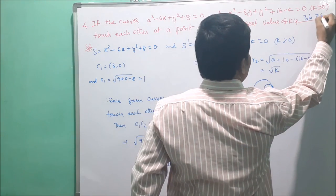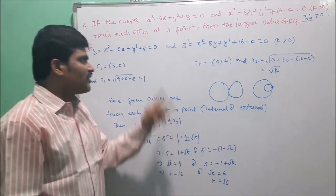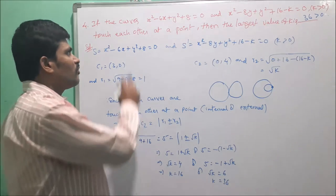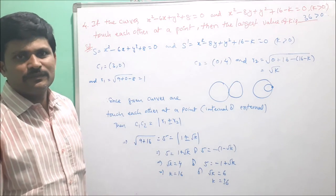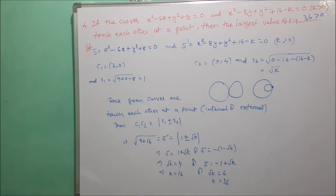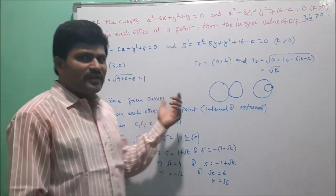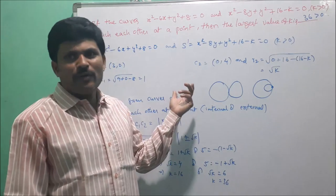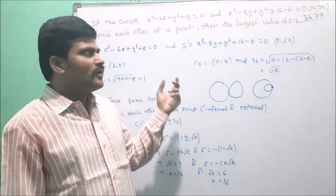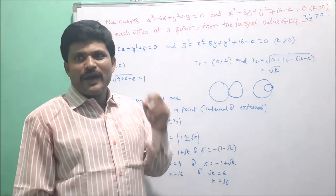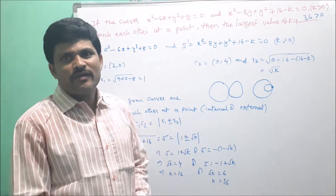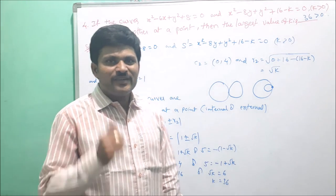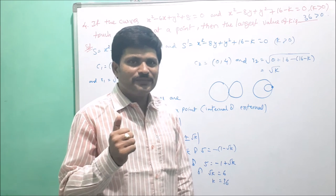K = 36 is always positive. This is the solution for this problem. These are the solutions of all four problems. Prepare and practice more problems from this topic. Wish you all the best. Thank you.